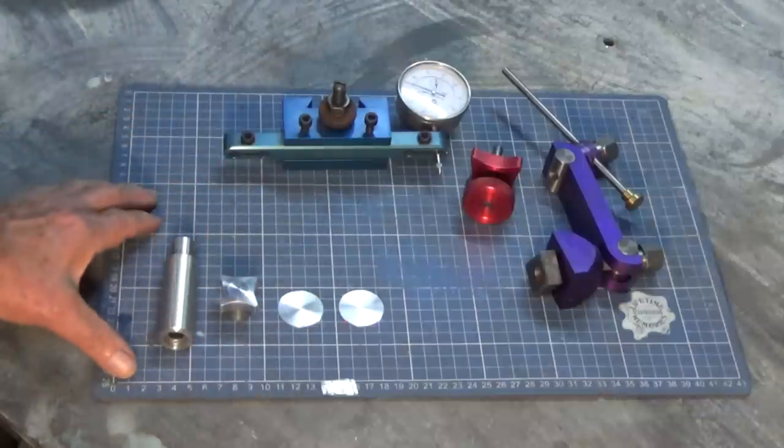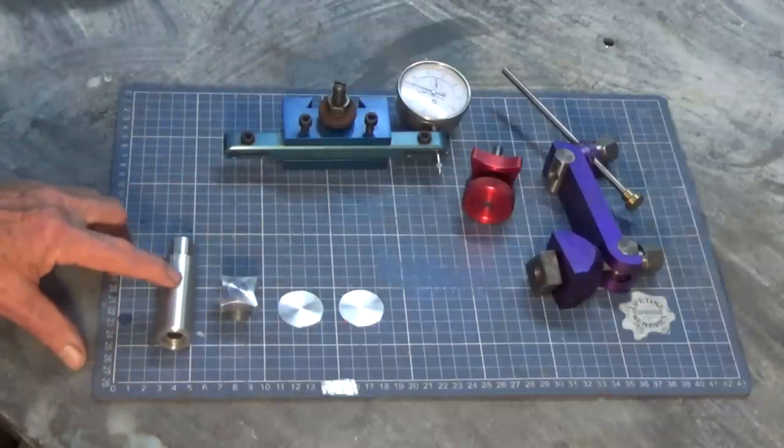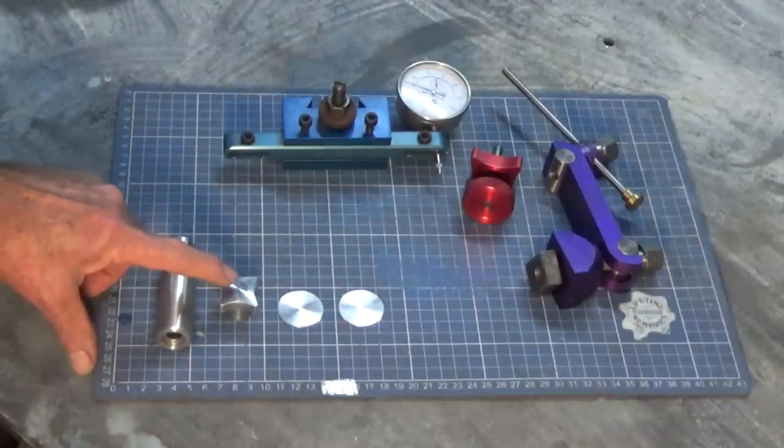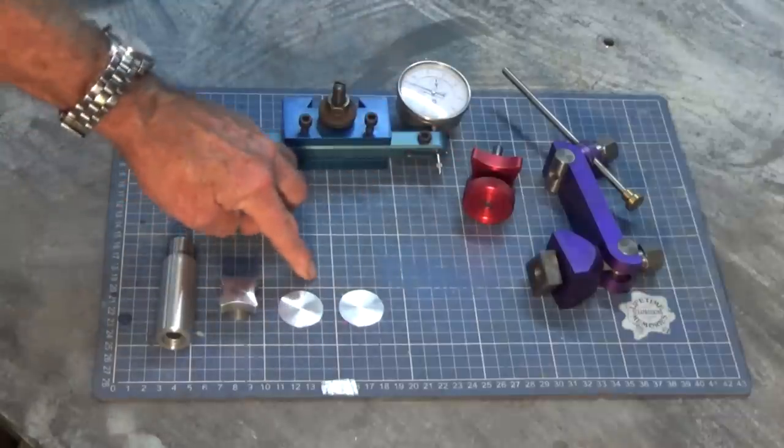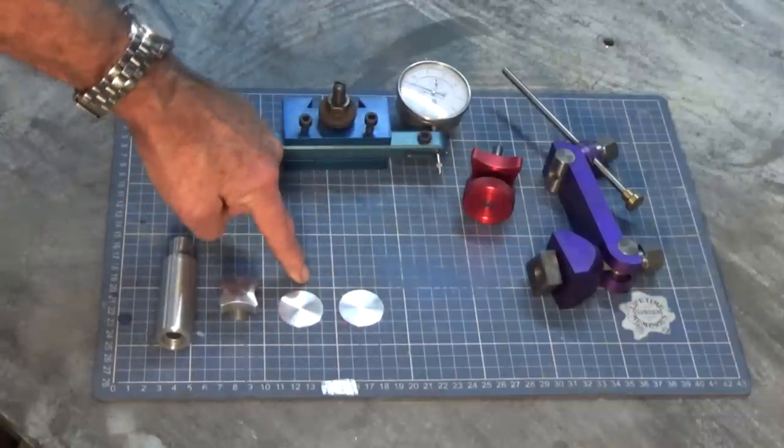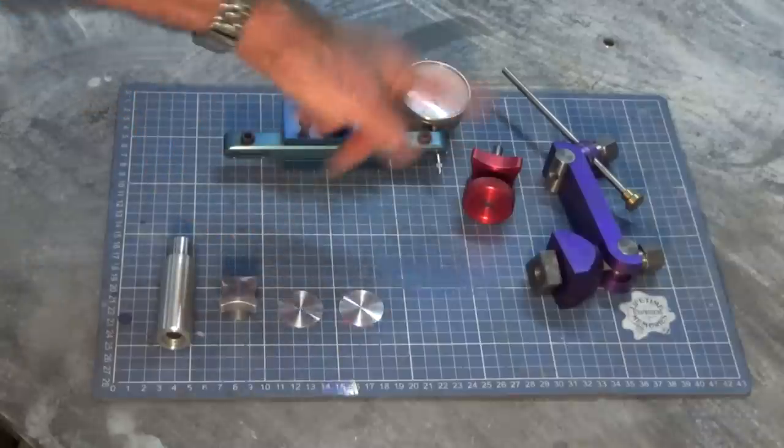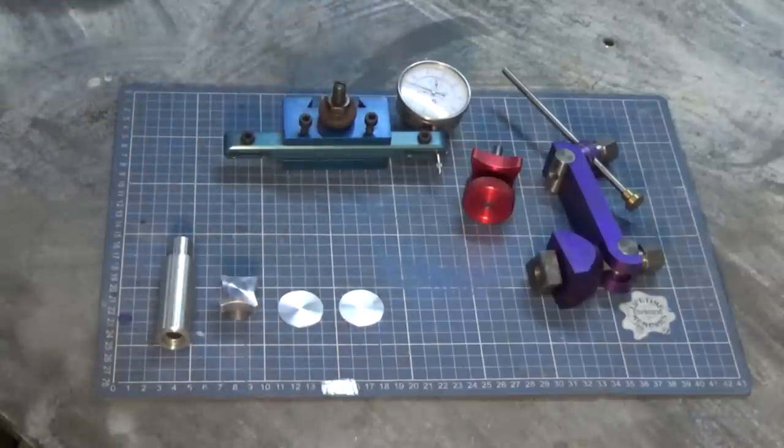These are some parts that I'm going to do today. This is a handle for a jeweller's roll, the locking knob for a mitre fence that goes on the bandsaw, and these are two little circular discs that are going to get turned into maker plates also for the bandsaw.